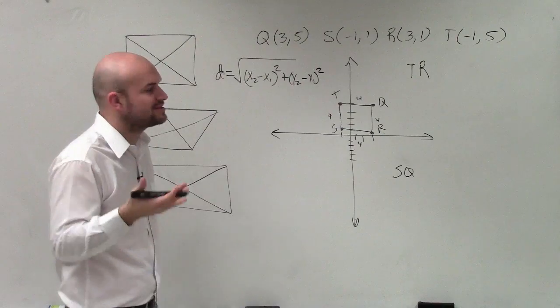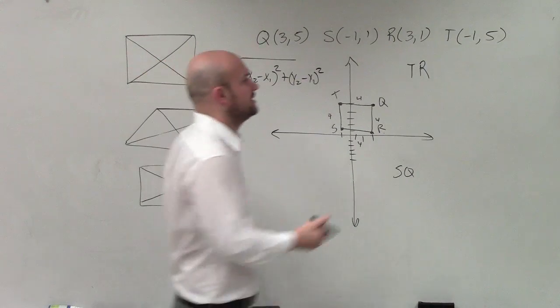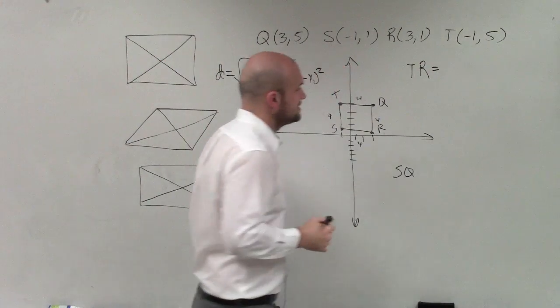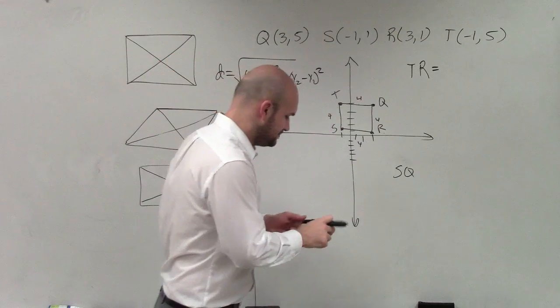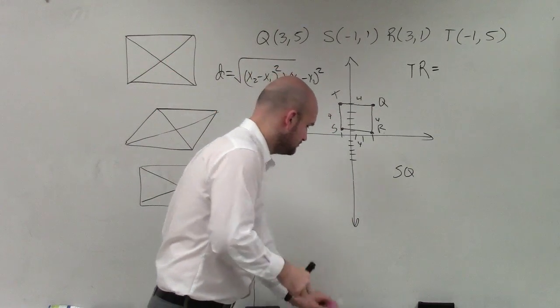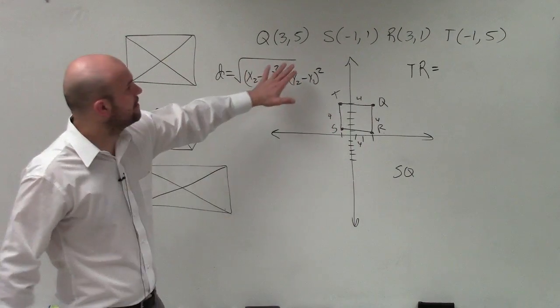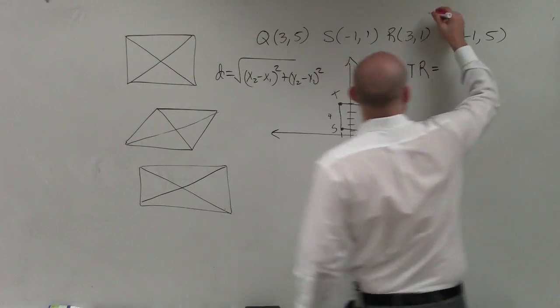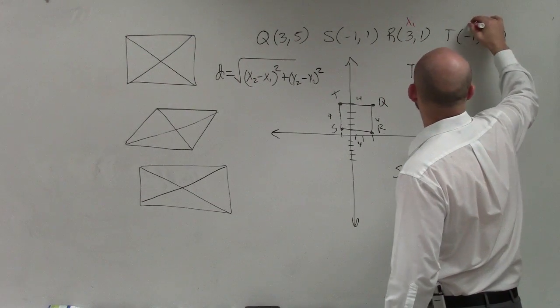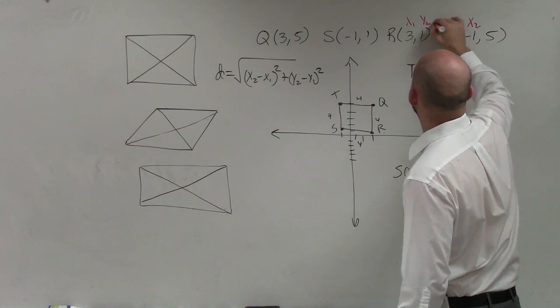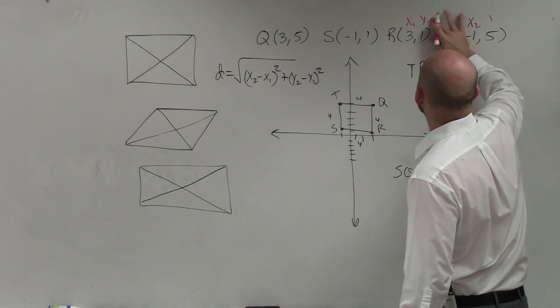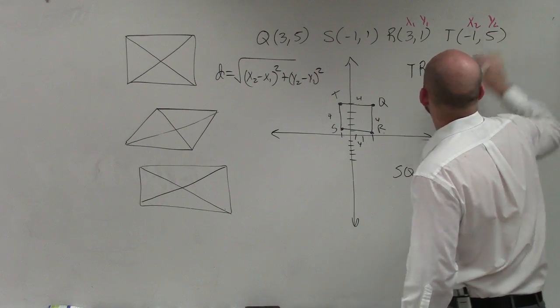And again, we already know it's a square, but I'm going to show you exactly how you can do it if the problem was not as basic as this. So now, what I need to do, TR, let's go ahead and label this as x1, x2, y2—or sorry, y1—and y2.